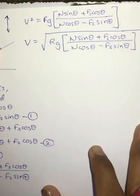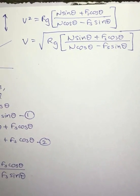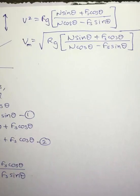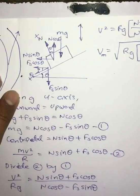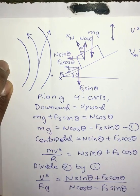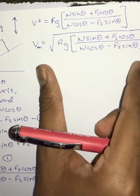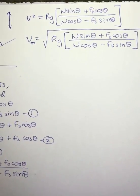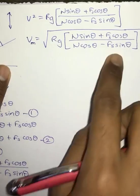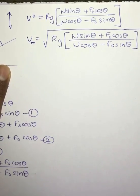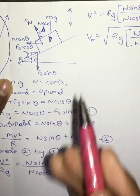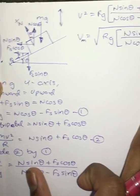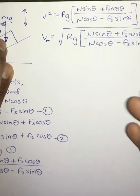This formula of velocity which we have obtained is the maximum velocity with which a vehicle can travel on a banked road. If the vehicle exceeds this speed, it will deviate from its path and there is a chance of accident. We can use this formula to calculate the maximum velocity on a banked road. Now suppose the friction is zero, or consider the case where the road is not banked — since there is no rise in height from the outer side, the road is plain and theta will be zero.